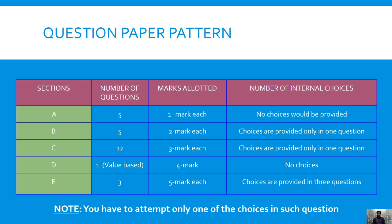Section A: 5 questions of 1 mark each, no choices in this section. Section B: 5 questions of 2 marks each, choices provided in only 1 question. Section C: 12 questions of 3 marks each, choices provided in only 1 question. Section D: 1 value-based question of 4 marks, no choice. Section E: 3 questions of 5 marks each, choices are provided in all 3 questions.